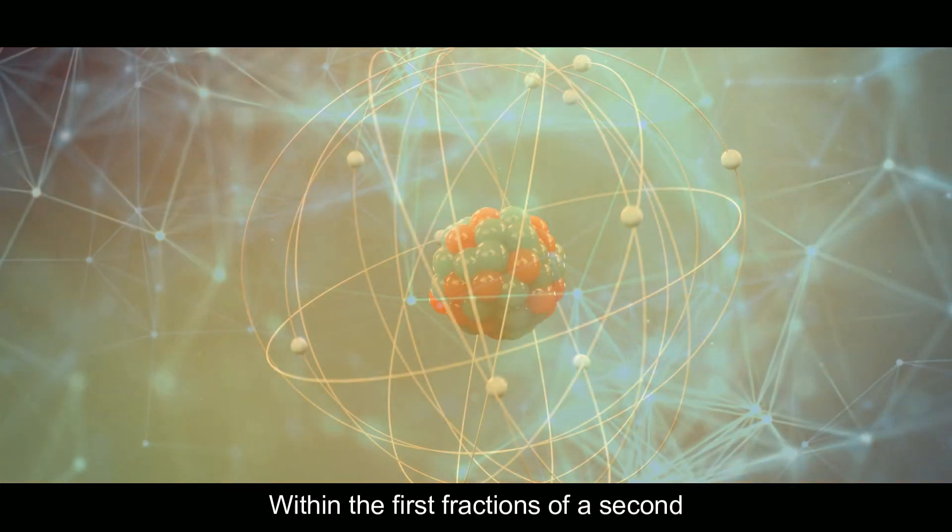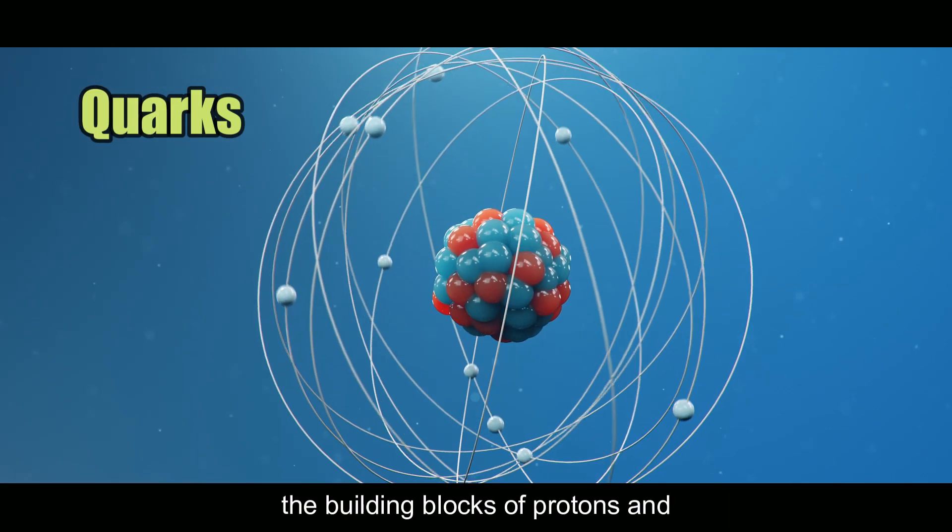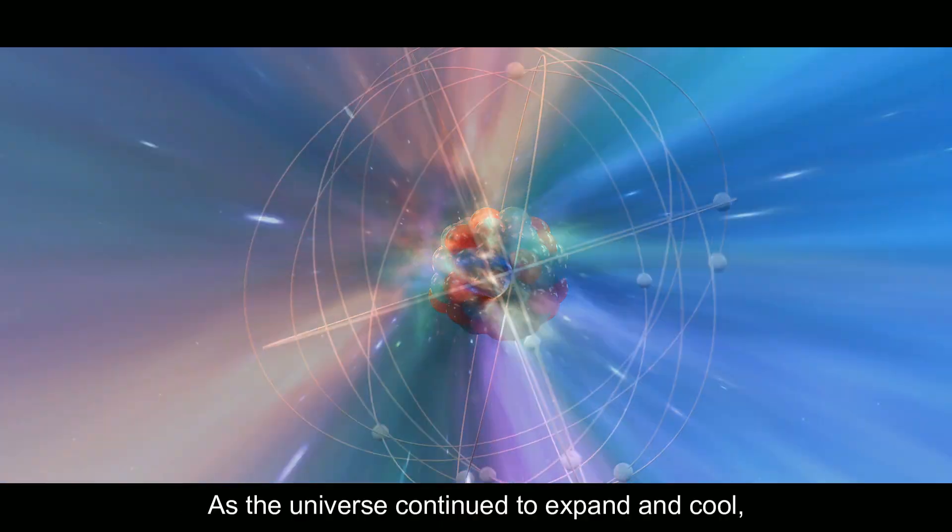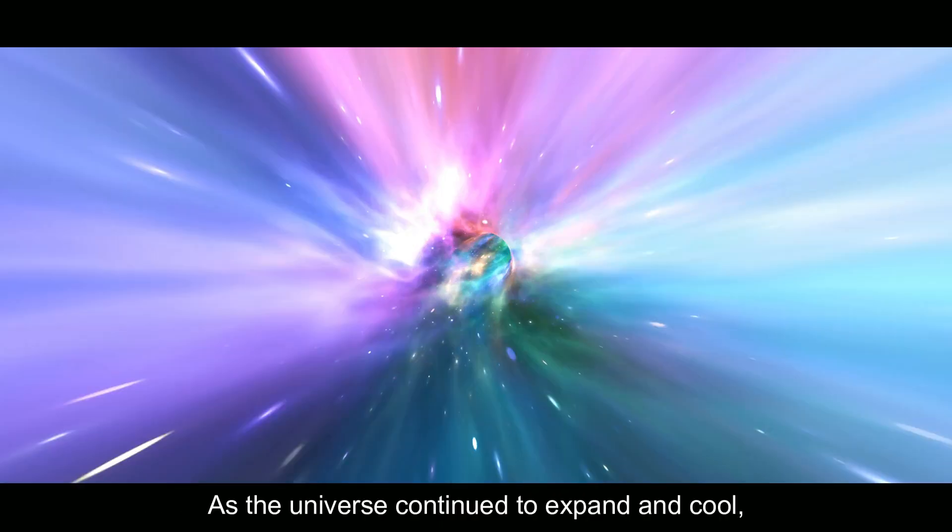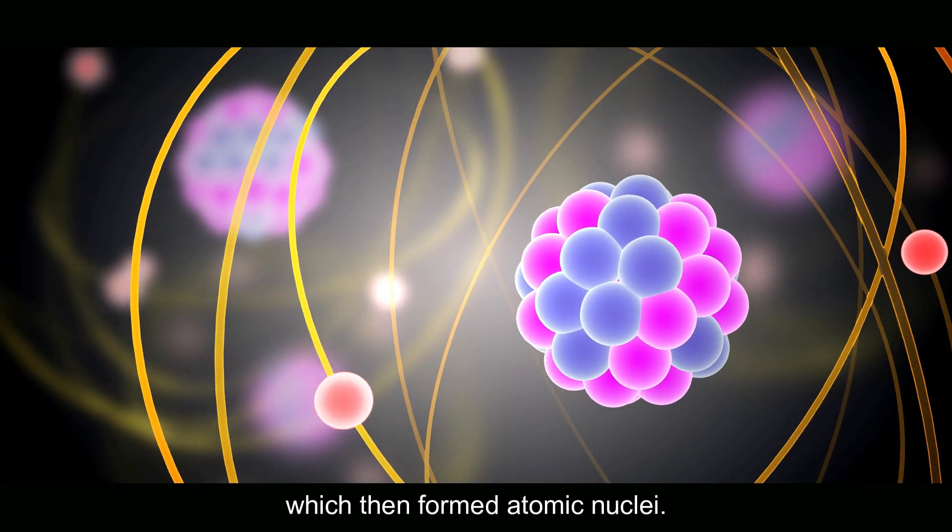Within the first fractions of a second after the Big Bang, the universe cooled just enough for quarks, the building blocks of protons and neutrons, to form. As the universe continued to expand and cool, these quarks combined to create protons and neutrons, which then formed atomic nuclei.